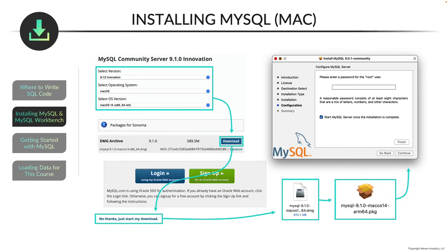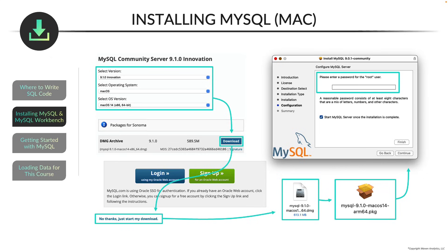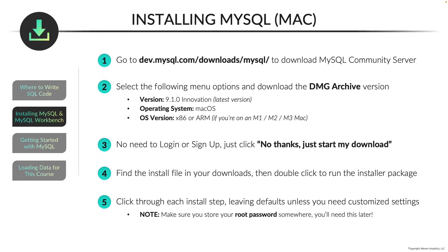Double click the .pkg file and that will start the installer. With the installer, you can select all the defaults and click continue and allow, until you get to the step that asks you for a password. Enter a password here, and it's really important to note down that password, because in a few steps we're gonna use it to get started with MySQL Workbench. You can pause the video and go through these steps on your own, or watch the demo for more detail.